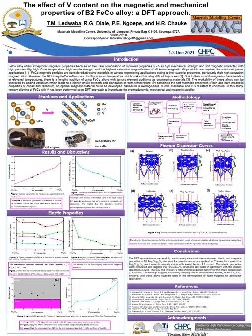Presenting the results: it is clear that the addition of vanadium increases the lattice parameters. This is due to the larger atomic radius of vanadium compared to that of cobalt. More importantly, the increase in vanadium content stabilizes the system further, since we observe more negative heats of formation with vanadium addition. So the structures are thermodynamically stable.